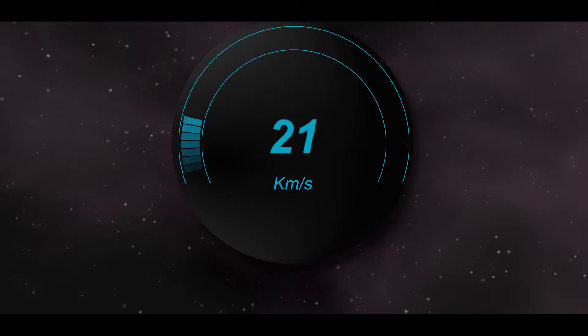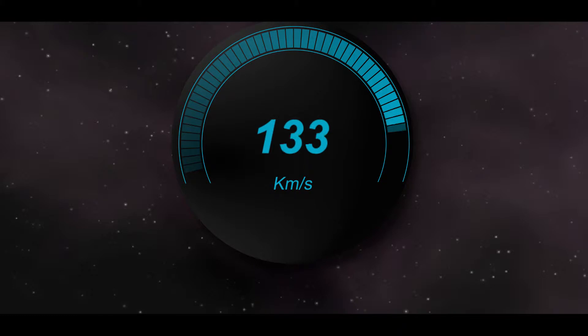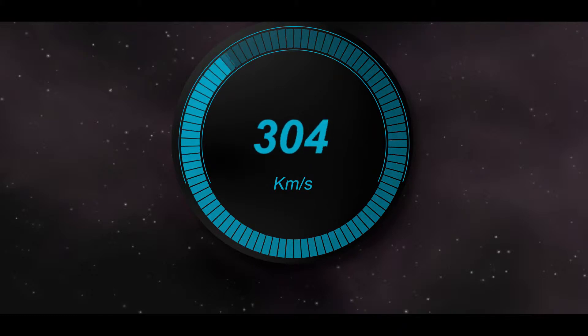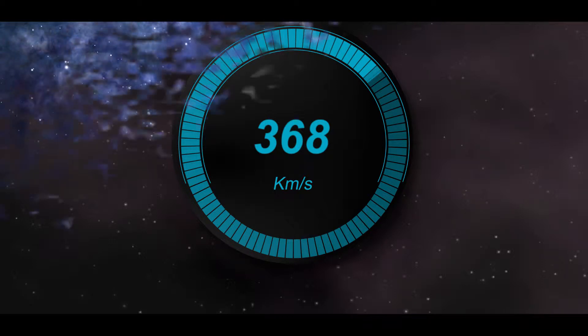For comparison, the Earth orbits the sun at 30 kilometers per second, while the entire solar system races at 368 kilometers per second, relative to the cosmic microwave background.